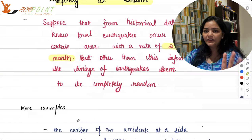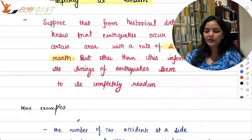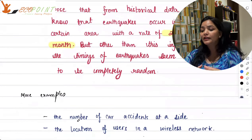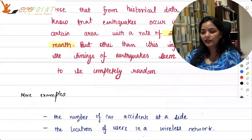So there is that randomness here. But number of car accidents at a particular site, you have an average rate. On an average, there are so many accidents per month. Similarly, location of users in a wireless network.